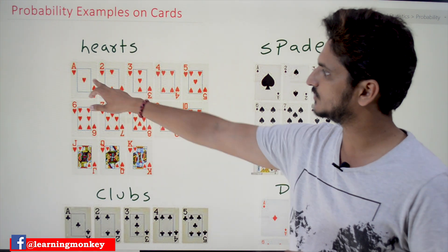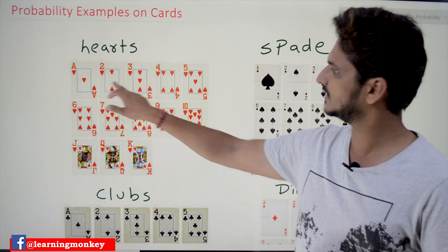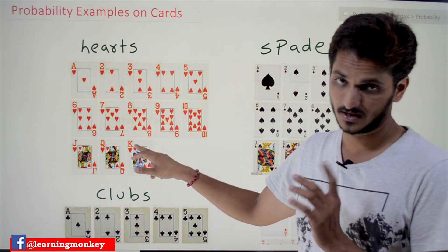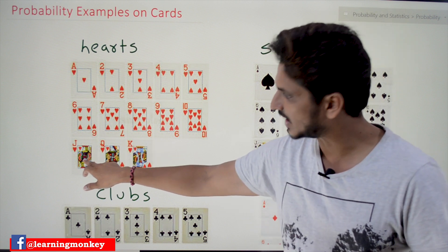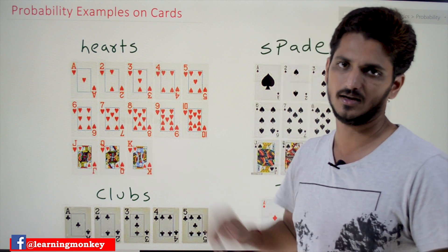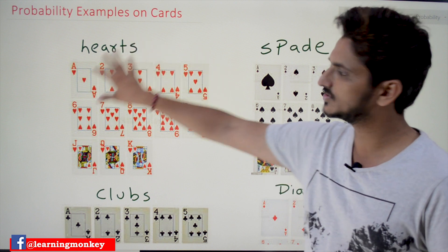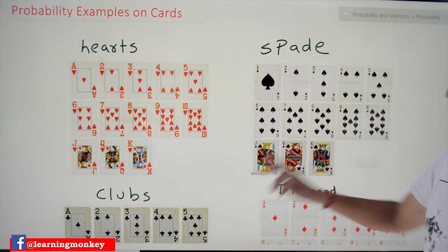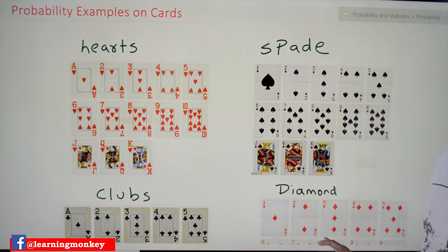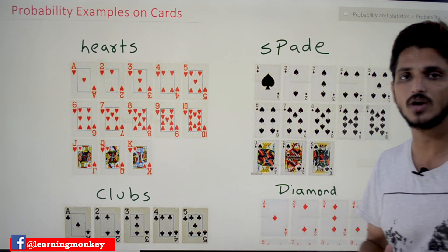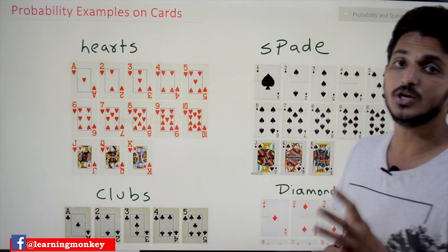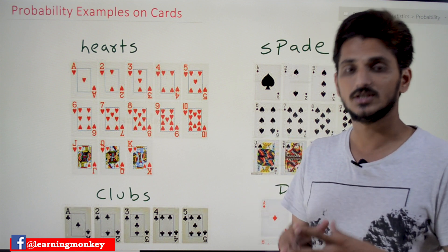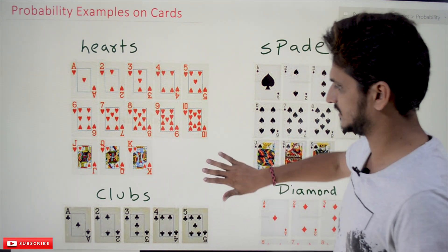In each symbol we are having 13 cards. The first one is Ace, then 2, 3, 4, 5, 6, 7, 8, 9, 10, and in place of 11, 12, 13 we have Jack, Queen, and King. So each symbol consists of 13 cards — 13, 13, 13, 13 — giving a total of 52 different cards in a playing deck.